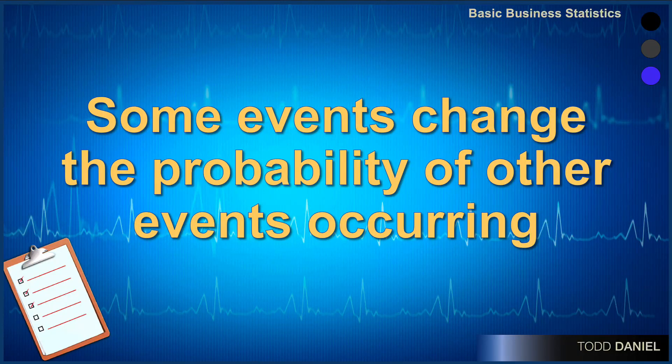The same kind of thing is at play when we talk about probability. The occurrence of one event can change the probability of another event occurring. We need to understand what types of events can change the probability of other events occurring.